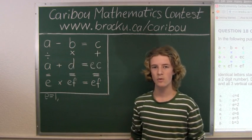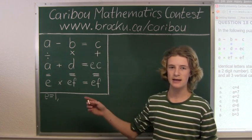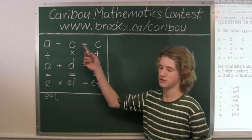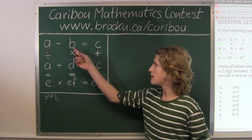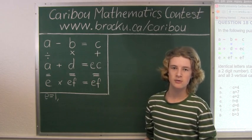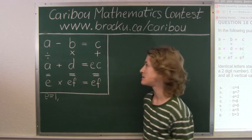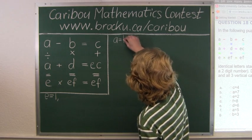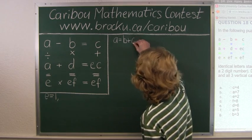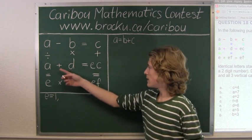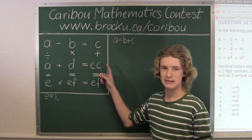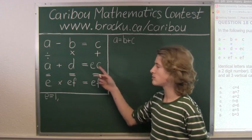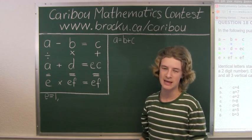So now we will use E equals 1 and substitute that into other equations. Let's look at the first row, A minus B equals C. So we can also write this as A equals B plus C. Now let's look at the next row. A plus D equals EC. So since we know E is 1 and it is in the tens column, we can write it as A plus D equals 10 plus C.